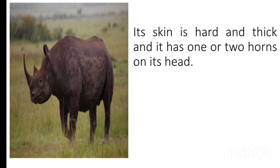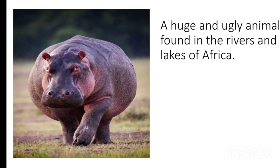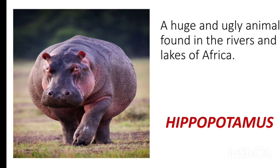Its skin is hard and thick and it has one or two horns on its head. The name of this animal is Rhinoceros. Now next — a huge and ugly animal found in the rivers and lakes of Africa. The name of the animal is Hippopotamus.